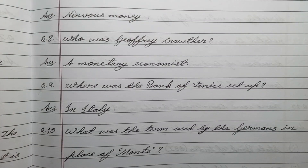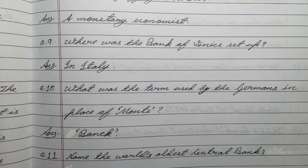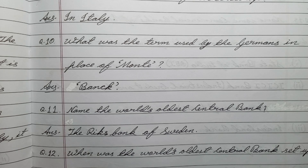Question number eight: who was Geoffrey Crowther? Answer: a monetary economist. Question number nine: where was the Bank of Venice set up? Answer: in Italy. Question number ten: what was the term used by the Germans in place of 'moneta'? Answer: 'bancs'.